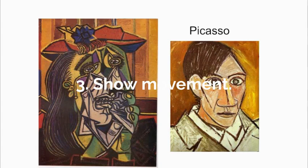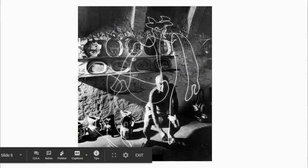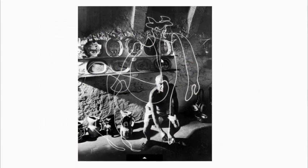The third way is to show movement. Because he's drawn multiple noses, that means she's moving all around. Blind contour automatically makes something cubist because it's disconnected, but it's more the abstract cubist.